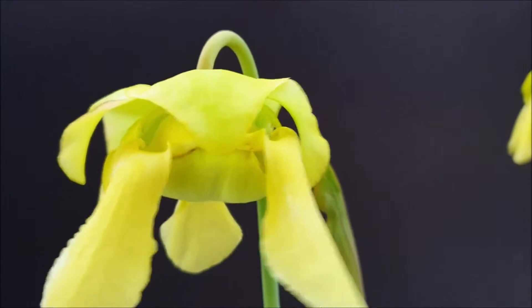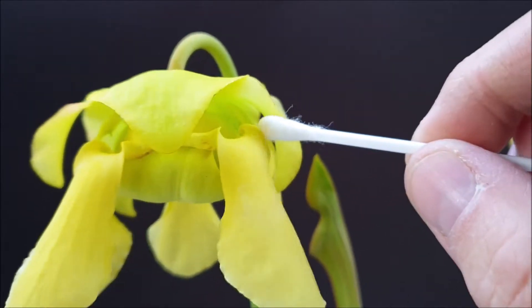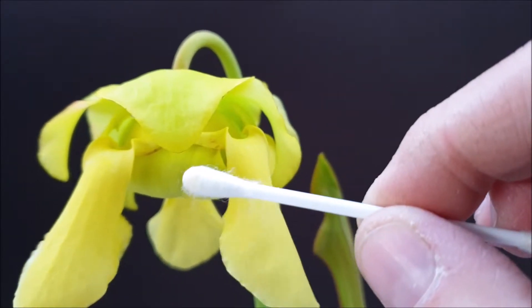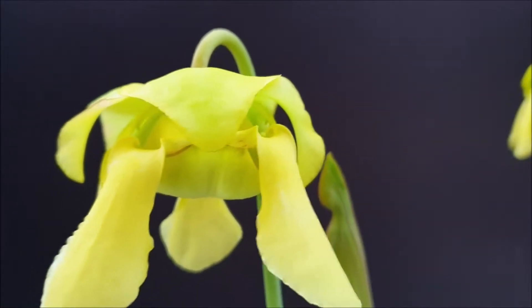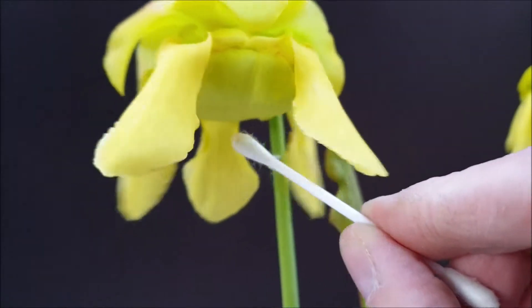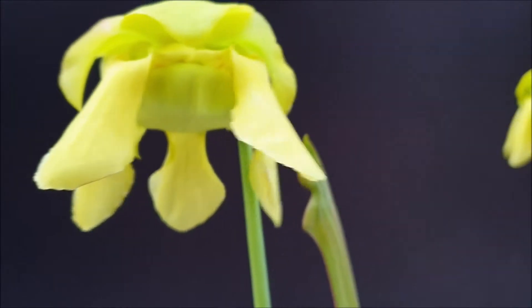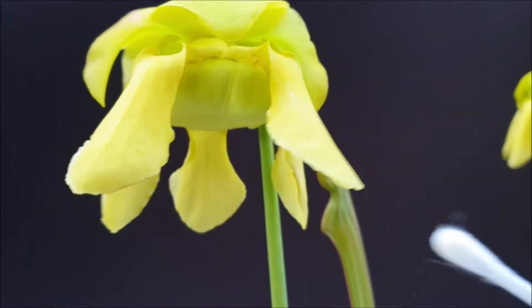And then the bee will try to crawl into the flower to get access to the pollen. Now where's the pollen located? The pollen is located on the top part of this style—that's called the style, that's the female part of the flower.